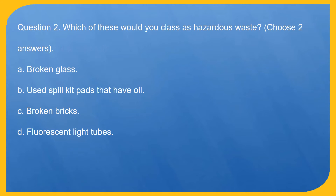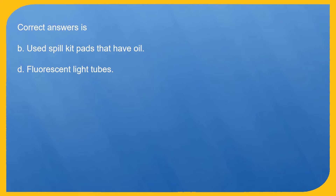Question 2. Which of these would you class as hazardous waste? Choose two answers. A. Broken glass. B. Used spill kit pads that have oil. C. Broken bricks. D. Fluorescent light tubes. Correct answers are B. Used spill kit pads that have oil, and D. Fluorescent light tubes.